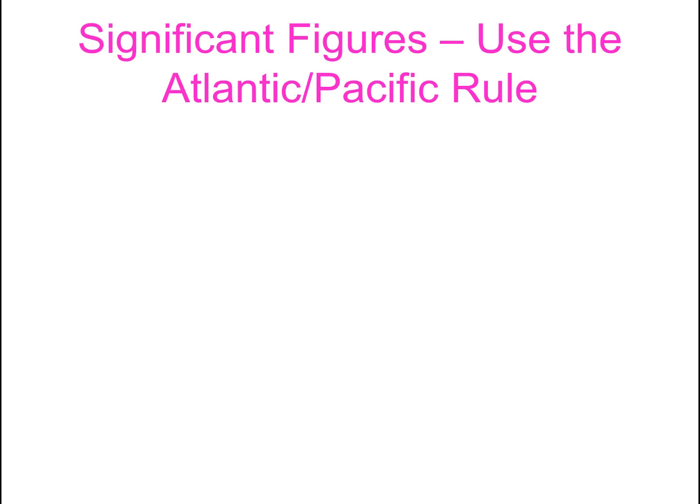Let's move into significant figures. To count significant figures, we're going to use what's called the Atlantic-Pacific rule. If you're looking at a number and trying to figure out where to round it, these rules describe how you round a number. Sometimes you'll plug numbers into your calculator and the answer you get will be a long number that takes the entire display, and so you wouldn't want to write that whole number. These rules govern what are called significant figures — some of those numbers on the display are called significant numbers.